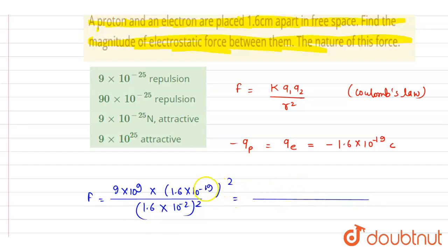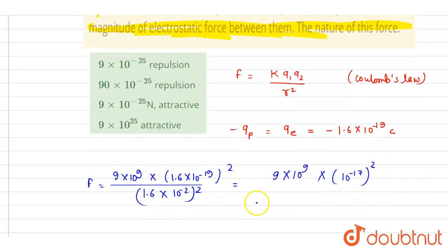So if you see here, this is 10 to the power minus 19 plus minus 19, it is 10 to the power minus 38. So you can just calculate this. It will be 10 to the power minus 38 divided by 10 to the power minus 4, which is 10 to the power minus 34. Plus 9, it is 10 to the power minus 25.